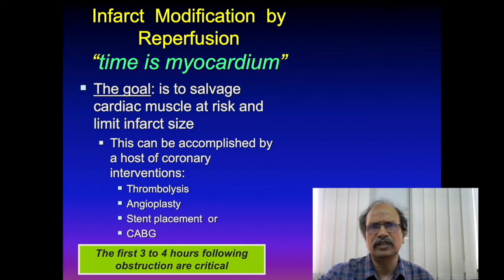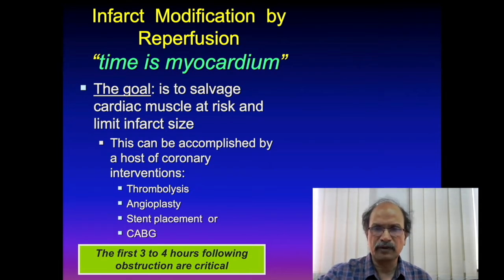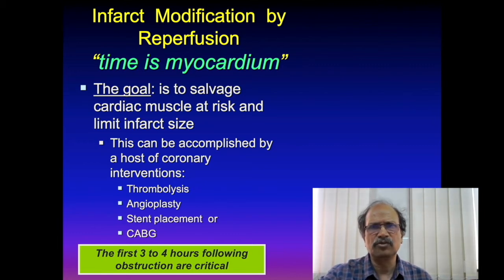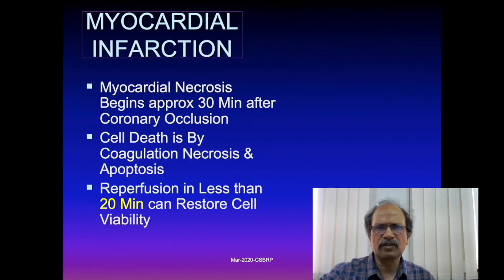Effective interventions include thrombolysis, angioplasty, stent replacement, or surgical correction such as coronary artery bypass grafting. While 20 to 40 minutes is crucial for harvesting damaged myocardium, the 3 to 4 hours following obstruction are also very critical. Myocardial necrosis begins approximately 30 minutes after coronary occlusion via coagulative necrosis and apoptosis.